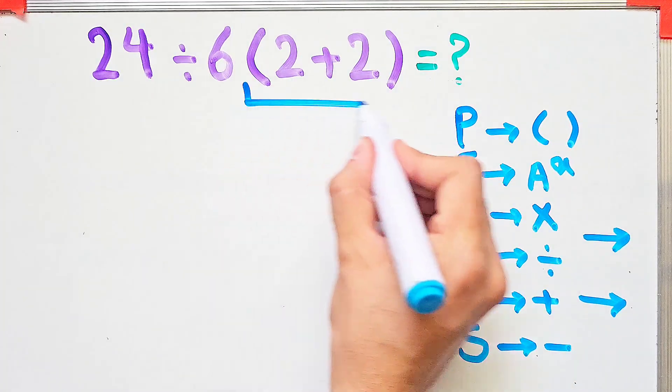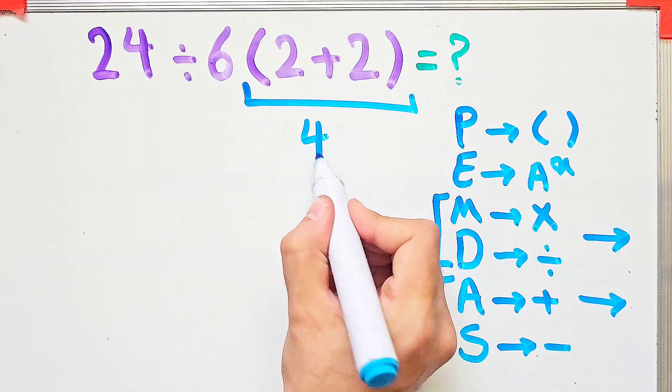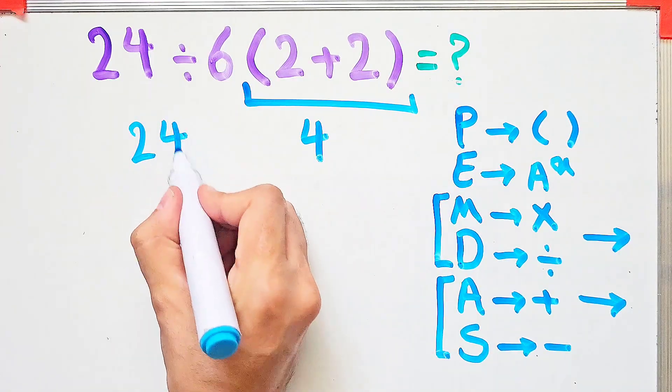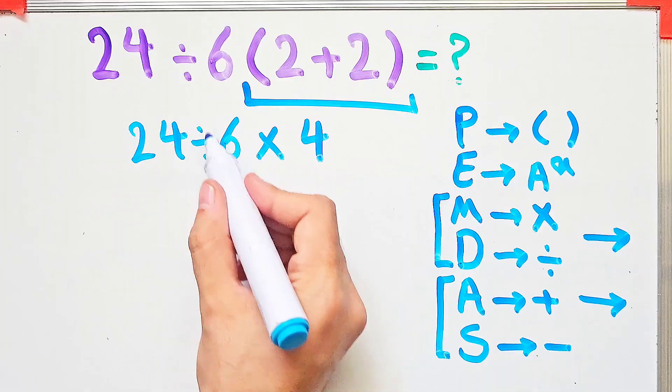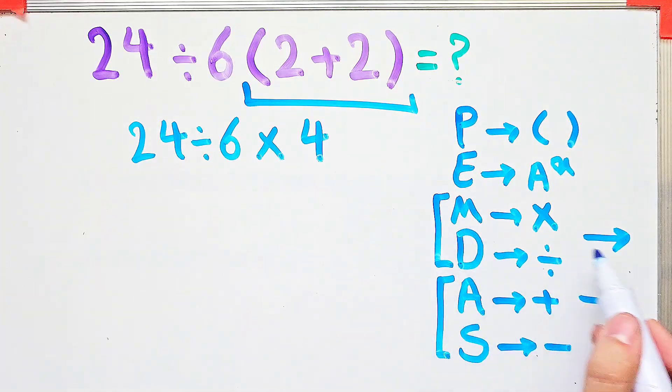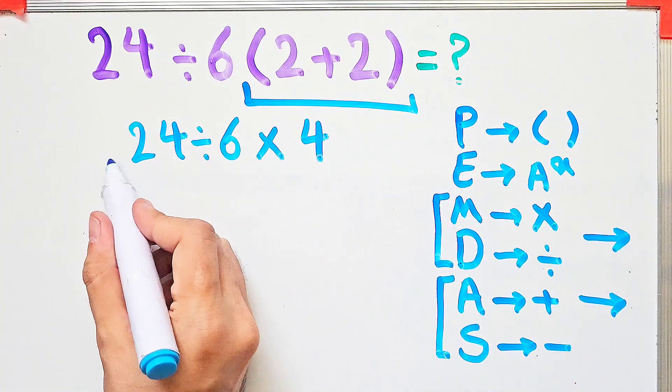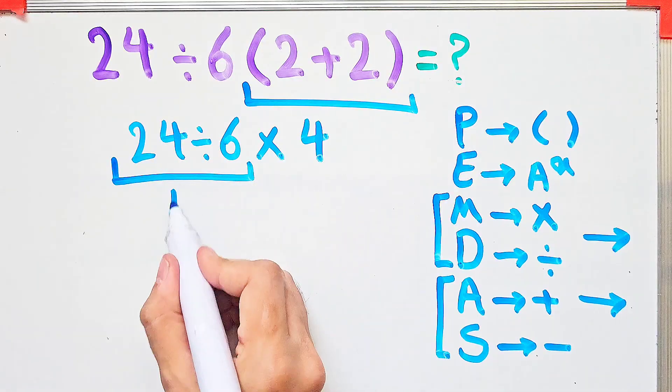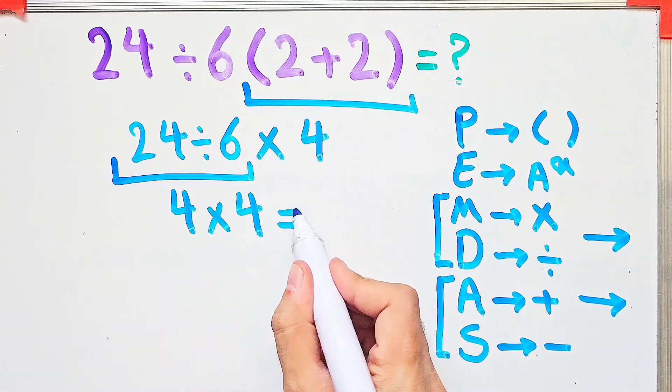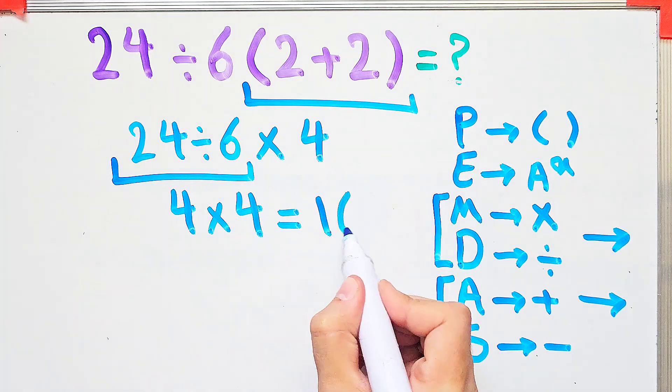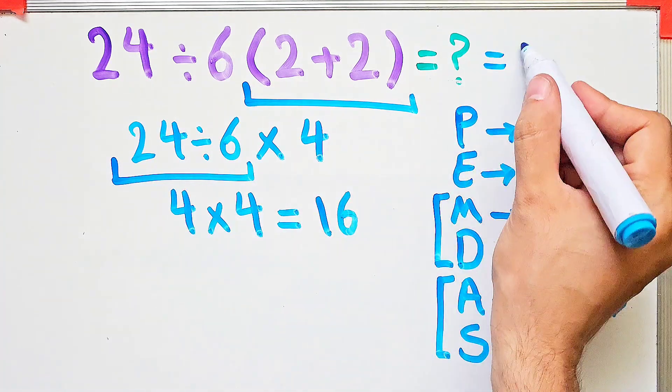First, we simplify the parentheses. 2 plus 2 equals 4. Now we have 24 divided by 6 then times 4. Because we have multiplication and division, we start from the left and simplify the question. 24 divided by 6 equals 4, and 4 times 4 equals 16. The final answer of this question equals 16.